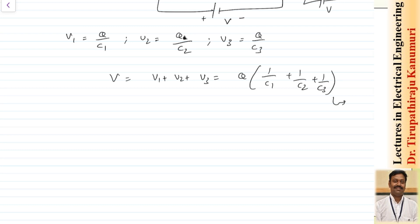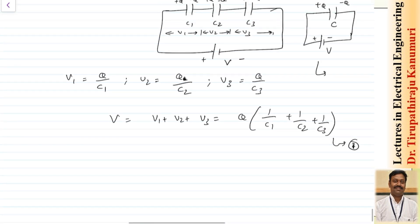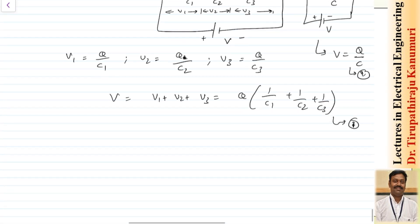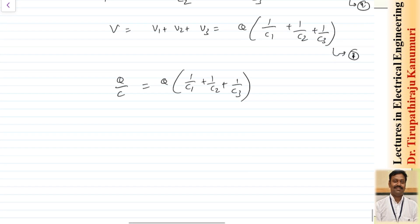I want to equate this to the second condition — the equivalent circuit. In the equivalent case, the voltage equals Q divided by C. Setting both equations equal: Q/C equals Q times (1/C1 plus 1/C2 plus 1/C3). From this we get that 1/C equals 1/C1 plus 1/C2 plus 1/C3. This is the combination formula for capacitors in series.